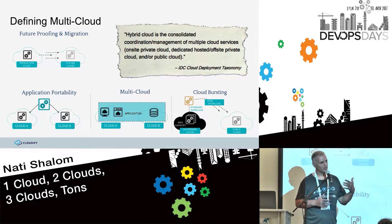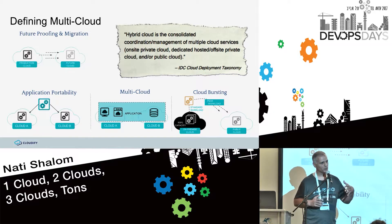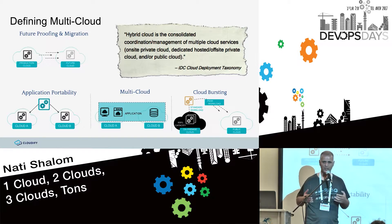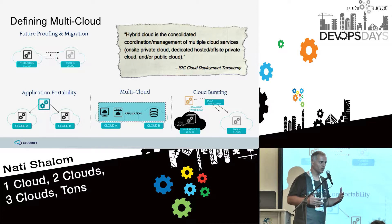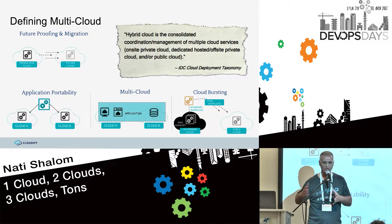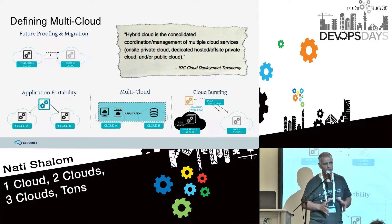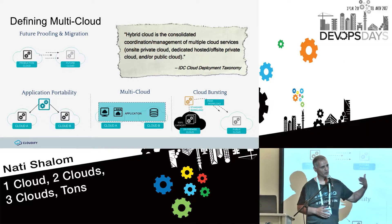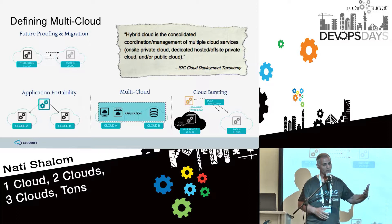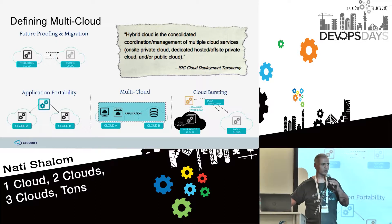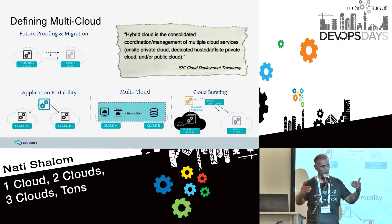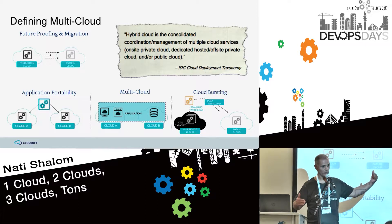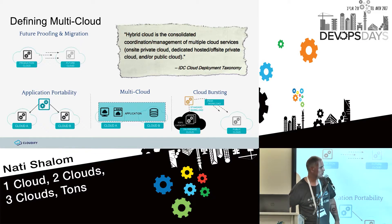Another use case is multi-cloud where you have the same service or application spread across multiple cloud environments — for example, running data services on Google and compute services on Amazon. It could also involve different private clouds, running on VMware vCloud while wanting to move to a public cloud, or having an OpenStack environment talking to your VMware environment. Any combination of two environments fits that use case. Finally, cloud bursting is when I'm running on a certain environment and want to borrow resources from another environment on-demand. The bottom line is really multiple use cases of environments and how you interact with them.